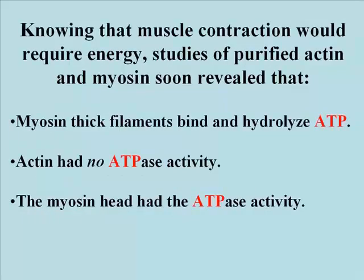Knowing that muscle contraction will require free energy, studies of purified actin and myosin soon revealed that the myosin thick filaments were capable of binding ATP and would actually hydrolyze ATP, although very slowly. Actin, on the other hand, had no such ATP hydrolyzing activity, so it appeared that myosin would be the site of ATP hydrolysis powering contraction. The S1 fraction of the myosin monomer — the myosin heads — were the site of ATP binding and hydrolysis.